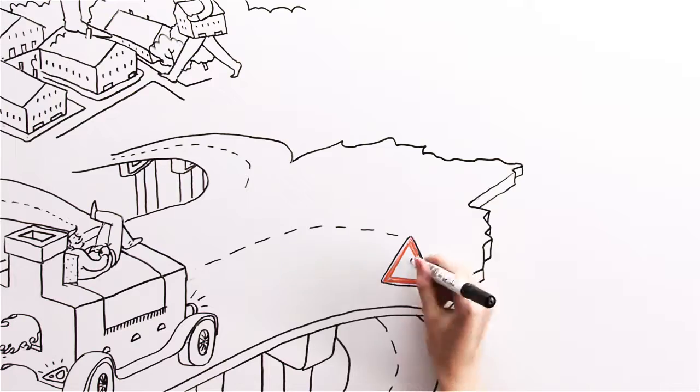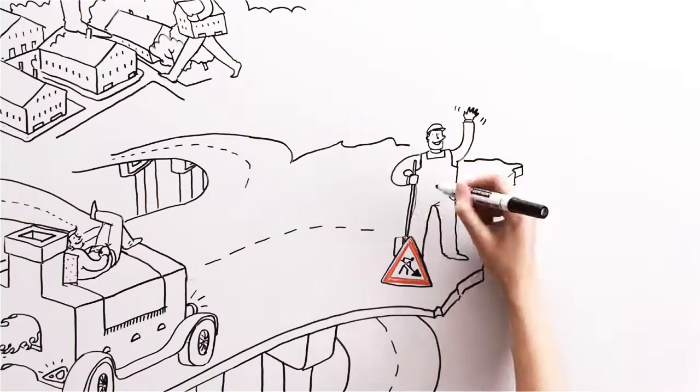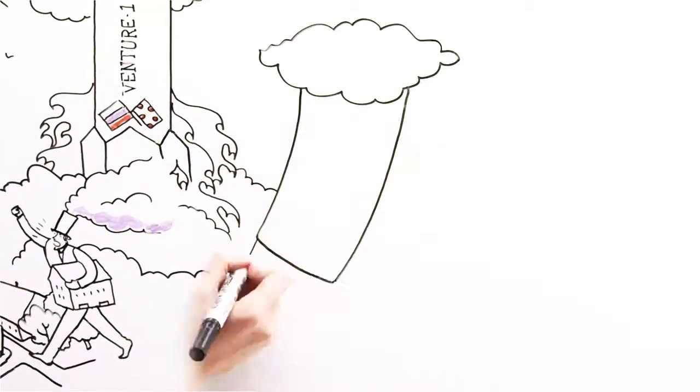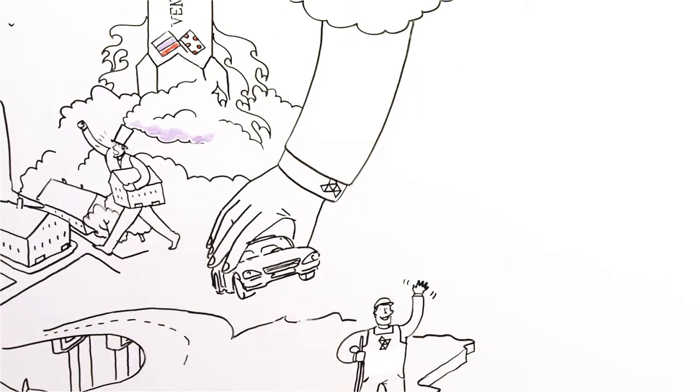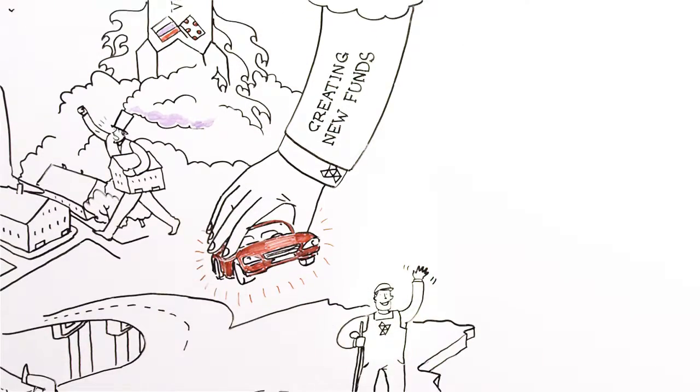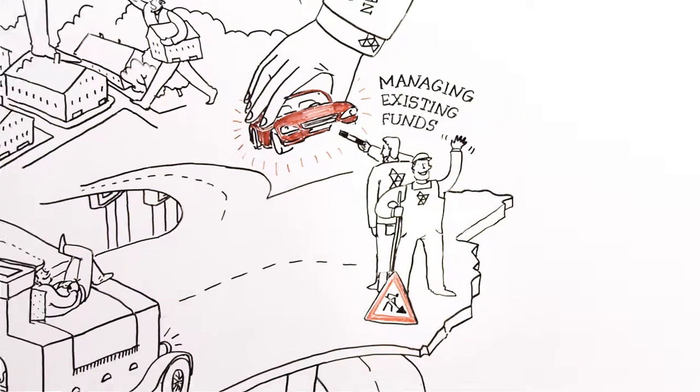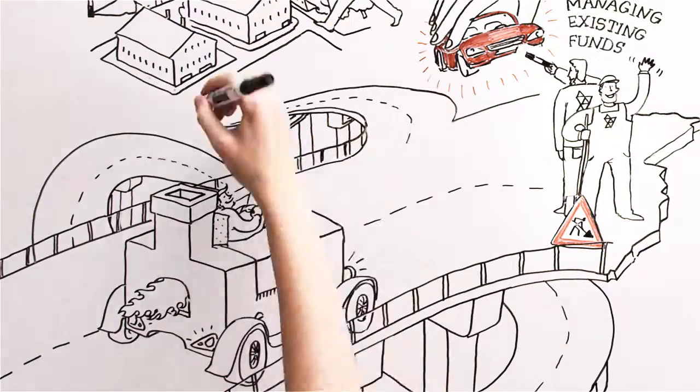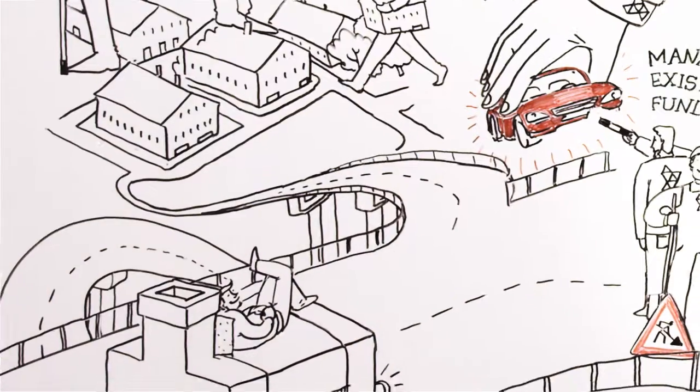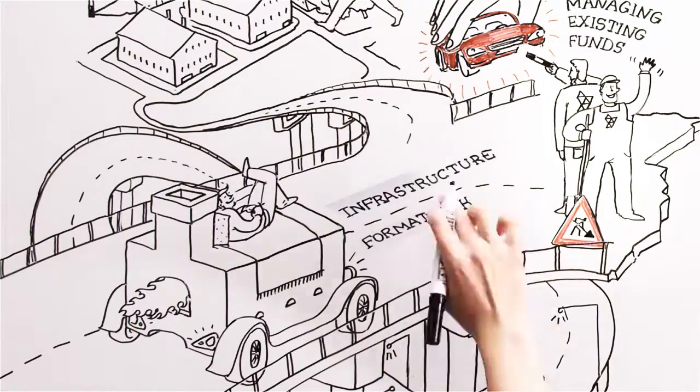Russian venture company RVC was created to solve this problem. On one hand, RVC creates new venture capital funds and manages existing ones. That is, it acts as a fund of funds. On the other hand, the company is engaged in formation of systemic conditions for these funds to work efficiently. What does this mean?